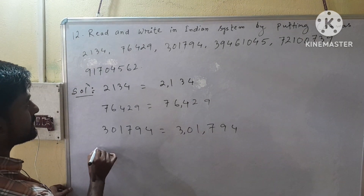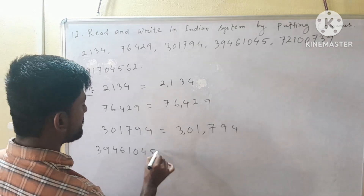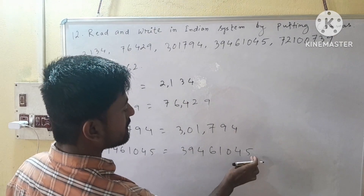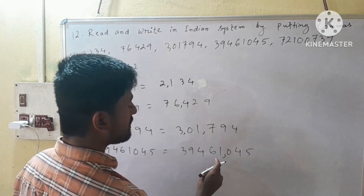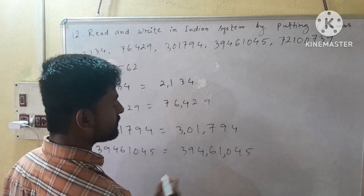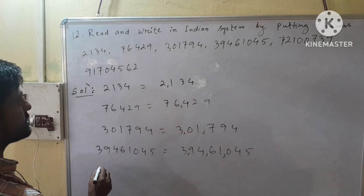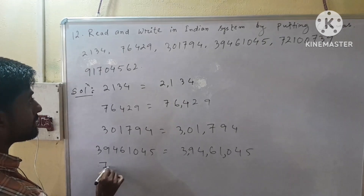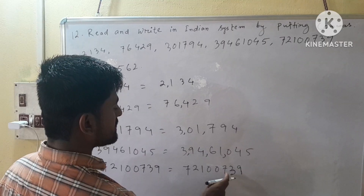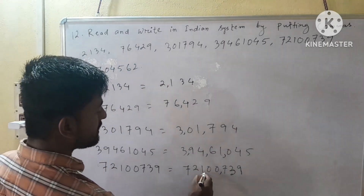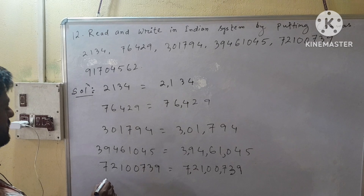Our next number is 3, 9, 4, 6, 1, 0, 4, 5. Here: 1's place, 10's place, 100's place — therefore we put a comma here. Next number 7, 2, 1, 0, 0, 7, 3, 9: 1's place, 10's place, 100's place — we put a comma here. After 2 more digits we put another comma here.